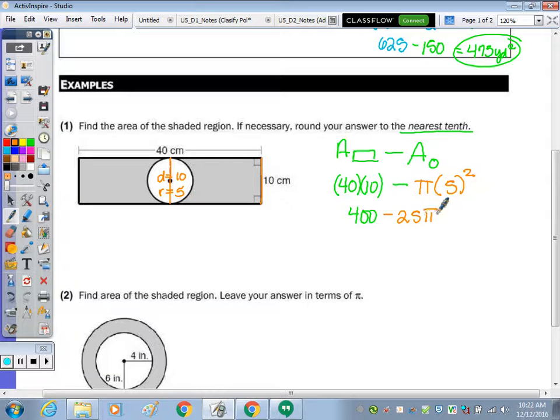Now that's exact. Type that into the calculator, 400 minus 25 pi. Please type it in with me. The decimal is 321.4601837.